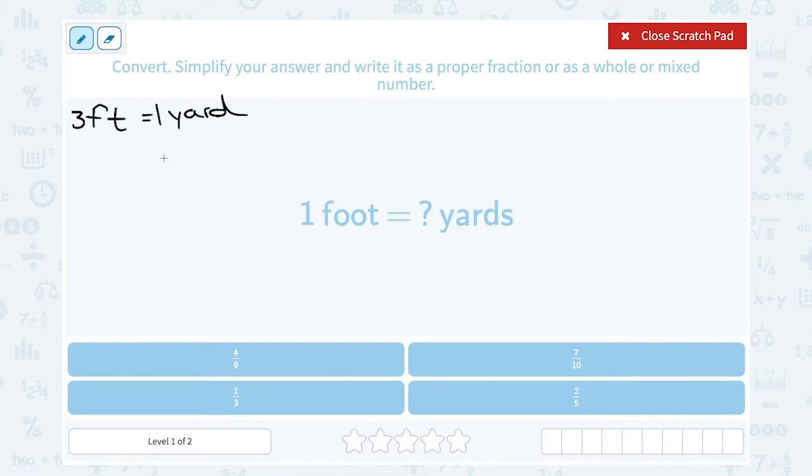So if I want to go from the number of feet to the number of yards, I would need to divide by three. So the number of feet divided by three, or over three, is going to equal the number of yards.